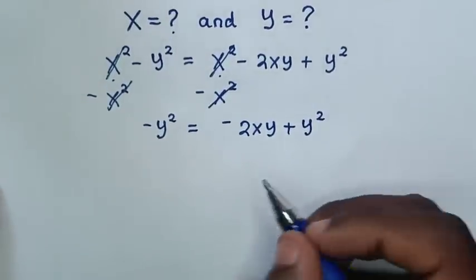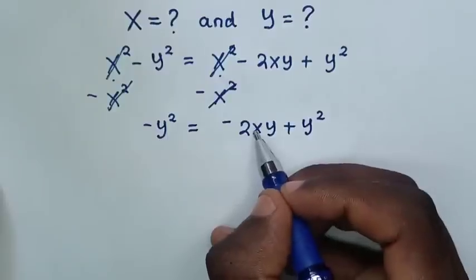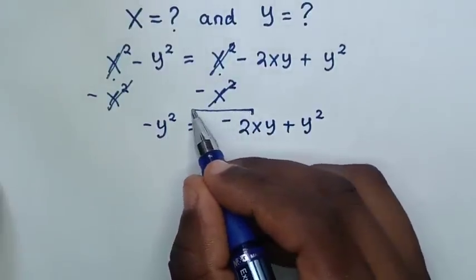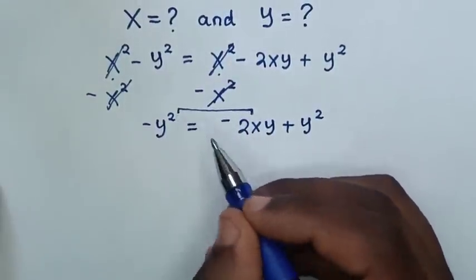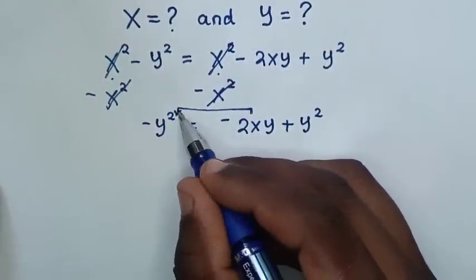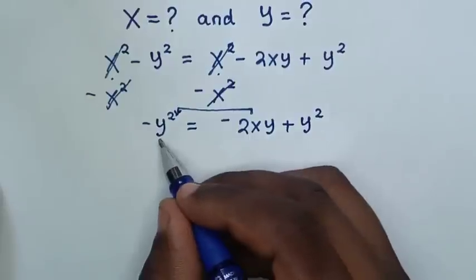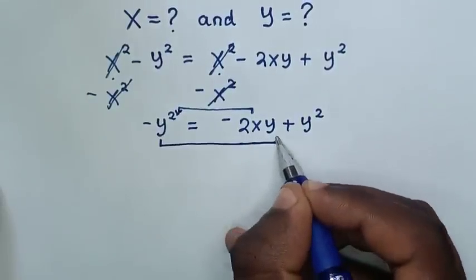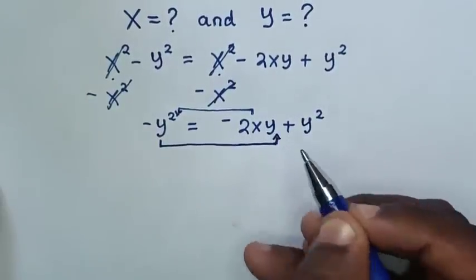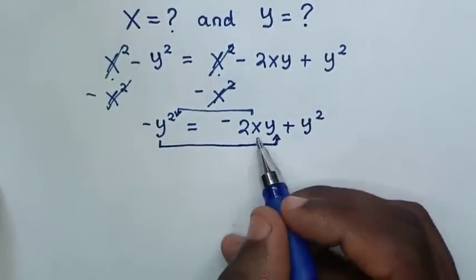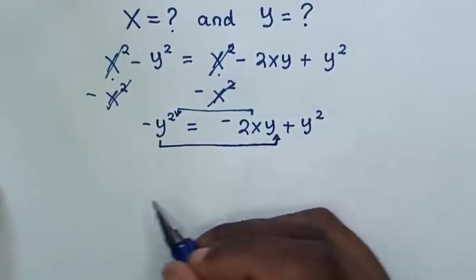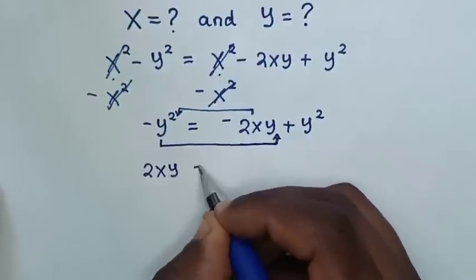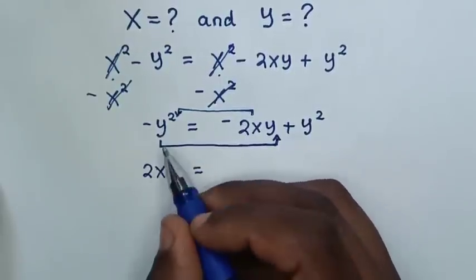Then, we take this negative 2xy to the left side, and this negative y squared we take to the right side. So this will be positive 2xy is equal to...